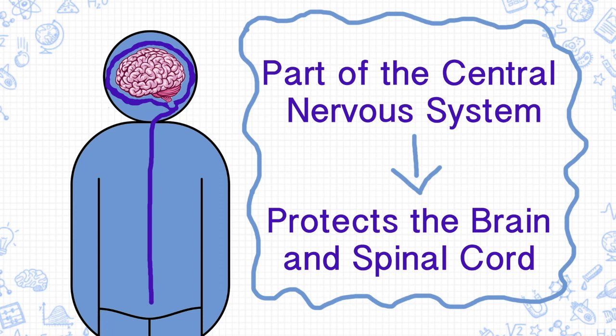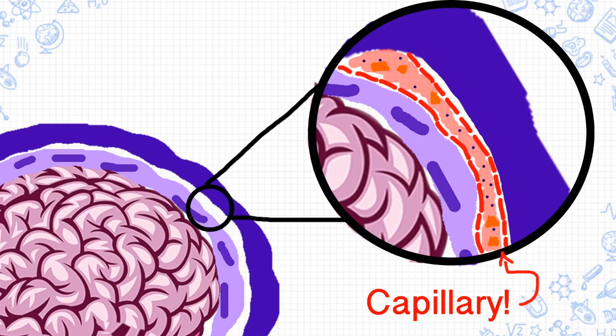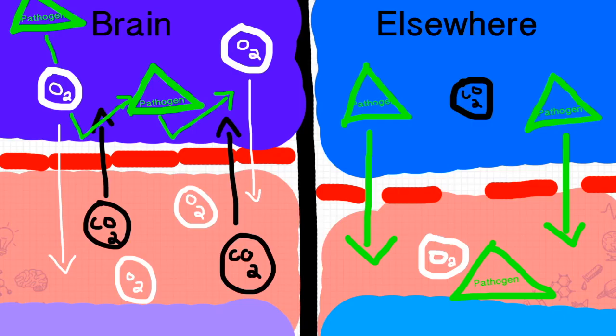Essentially, the system of capillaries that are part of BBB are less permeable than other capillaries in the body, meaning they allow certain things like oxygen and carbon dioxide to pass in and out, yet restrict others like drugs and certain pathogens.